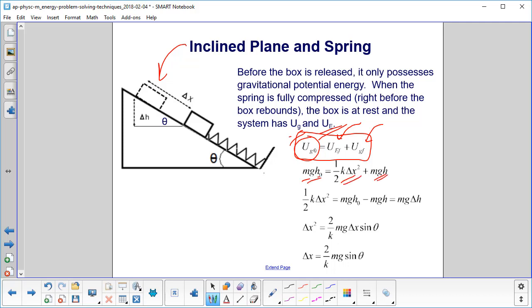And what are we trying to solve for? Delta x. So we want to go ahead and isolate that. So we bring one-half k delta x squared on the right side. We note that h0 minus h is just delta h. It's just the difference in height here, because that's what we're interested in, the change in potential energy.